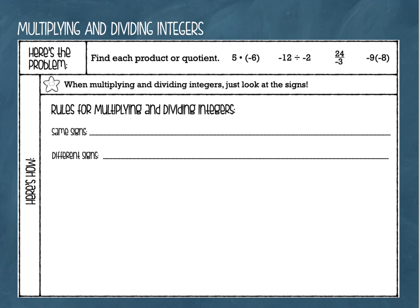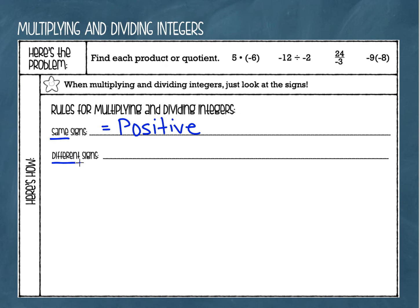Are you ready? We're going to copy them down right now. You're going to look at your signs, and when your signs are the same, your answer is going to be positive. So whether you have two positives or two negatives, as long as those signs are the same, your product or your quotient is going to be positive. If you have different signs — one positive and one negative — your product or quotient is going to be negative. And it is as easy as that.